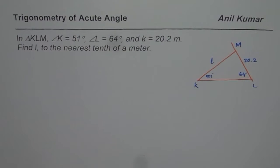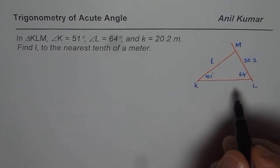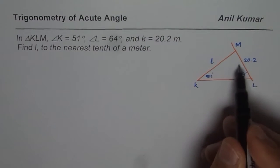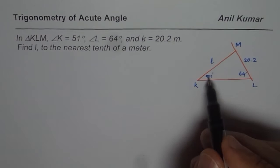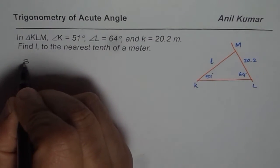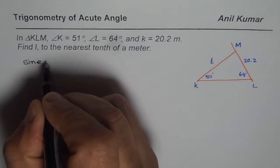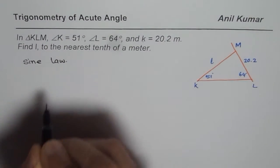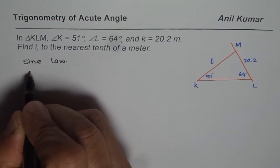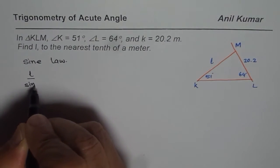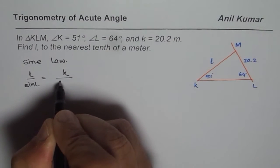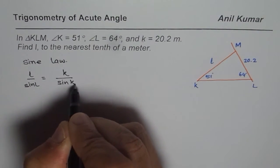Now let us solve this particular triangle. We can use sine law since we know one of the ratios — we know the ratio of a side to the sine of its angle — so we can find L. Using sine law: L over sine of angle L equals K over sine of angle K.